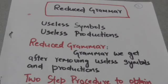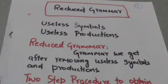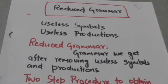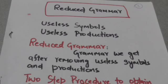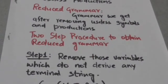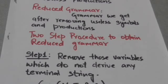Hello friends, welcome back. In this tutorial we will study about reduced grammar. First of all we will learn about useless symbols and useless productions of our grammar. Useless symbols are those variables and terminals which do not appear in any derivation of a string of terminals. Productions which involve useless symbols are called useless productions. The grammar we get after removing its useless symbols and productions is called reduced grammar. The language generated by the reduced grammar is the same as that generated by the original grammar.